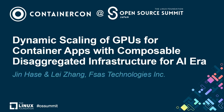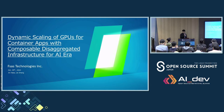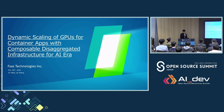Hello, everyone. My name is Gene Hase. I work at EFSAS Technologies, Inc., and we are developing emergency architecture which is called composable disaggregate infrastructure. Today, we introduce dynamic scaling of GPUs for content apps with composable disaggregate infrastructure for AI era.